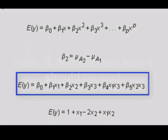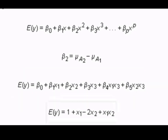Beta sub 0, plus beta sub 1, x sub 1, plus beta sub 2, x sub 2, plus beta sub 3, x sub 3, plus beta sub 4 (clickable on mouseover) x sub 1, x sub 3, plus beta sub 5, x sub 2, x sub 3 (clickable on mouseover).